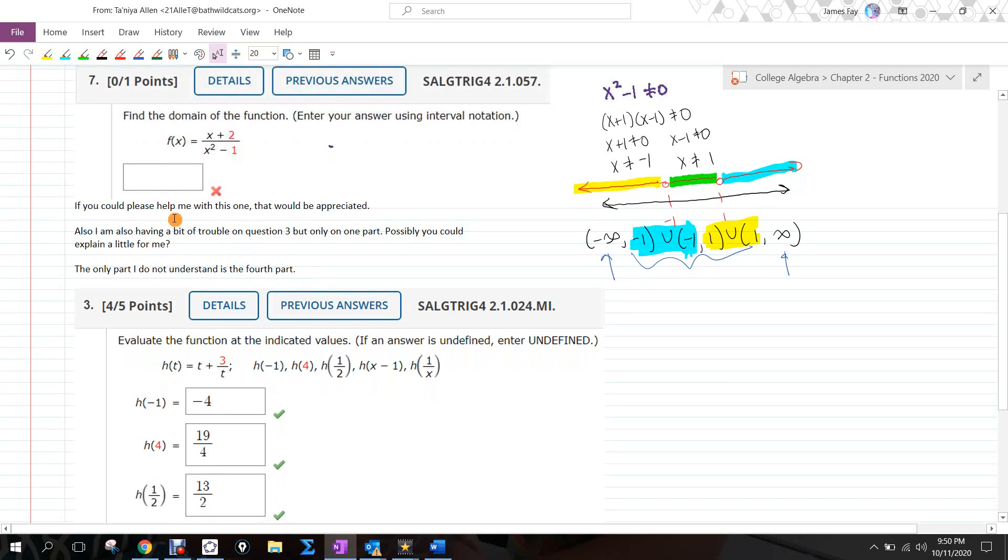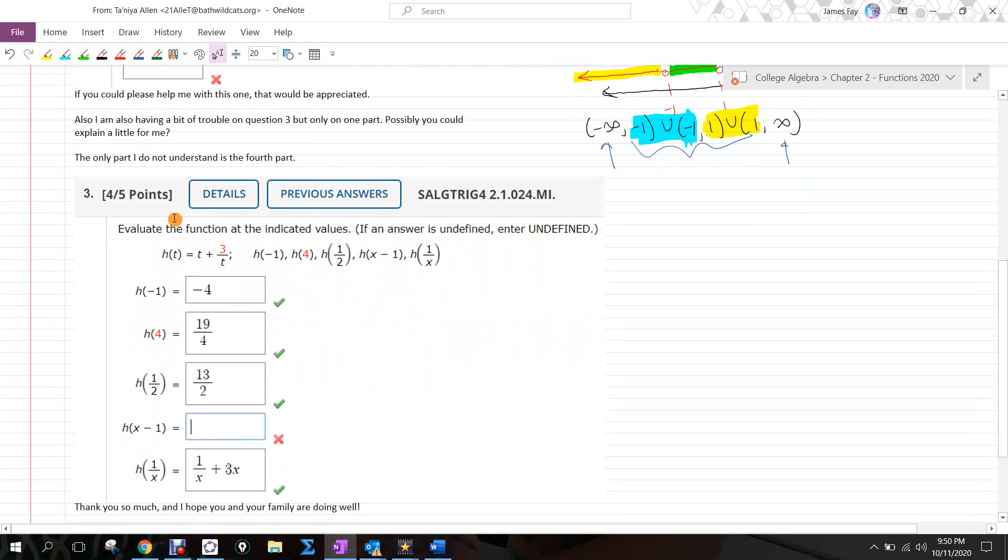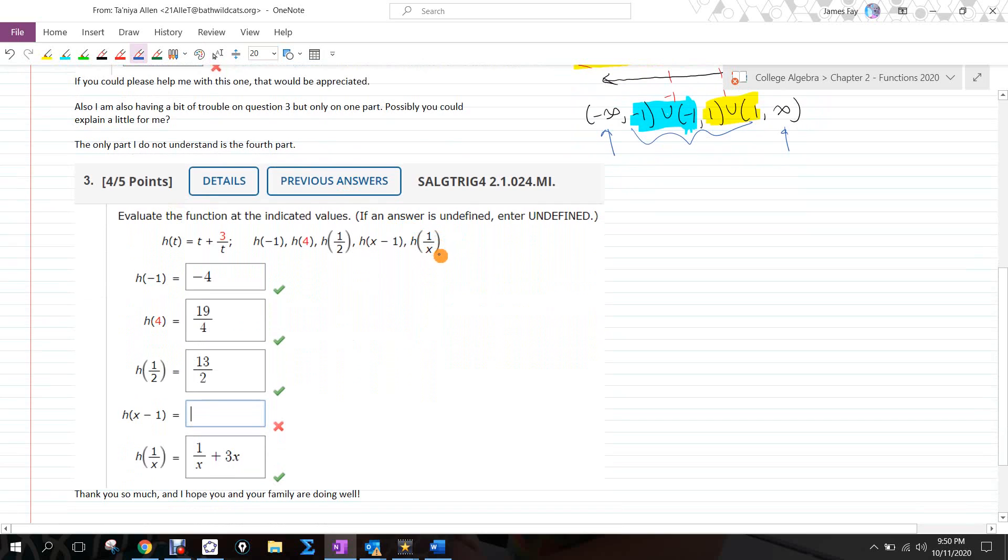Question three. So you had, it says you had question three. Okay. So all we're going to do here is take our x minus one. That's our input. Okay. And we're going to plug it into these two spots of t. So h of t was t plus three over t. Now it's asking you h of x minus one. So instead of t, like we're seeing here, it's going to be x minus one. So you go x minus one plus three over x minus one.